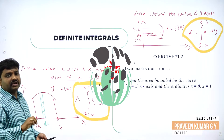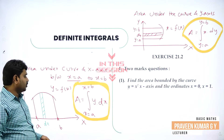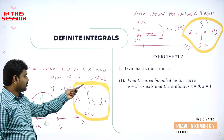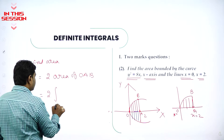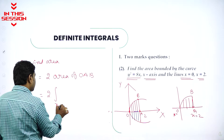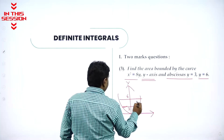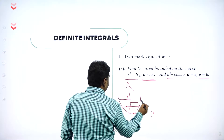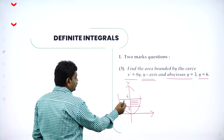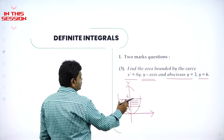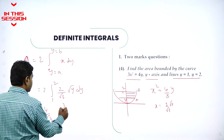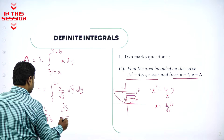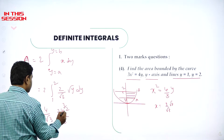This is the application of a definite integral. Definite integral means from A to B. Area of O, A, B is the area under the curve and x-axis. So find this area and multiply it two times, then you will get this part also. There are two parts. Y power half is Y power 3 by 2 divided by 3 by 2.